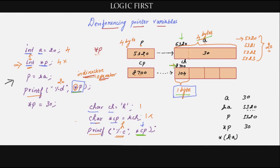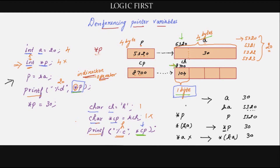If you use star p, it will go to that address and fetch the value, so 30 will be printed. You can also give star of (&a): the address of 'a' is 5320, and star means the value at that address, so the value at that address is again 30. Instead of directly giving 'a', it is like indirectly giving the address of 'a' and then fetching the value — both are the same. The star has to be read as 'the value at the address', so star p means the value at the address p. Star (&a) is also valid because &a is an address. But if you give star a, it is not valid — 'a' contains a number 30, not an address, so this is invalid.